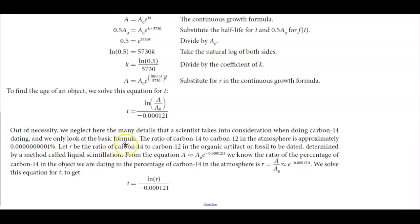Out of necessity, we neglect here the many details that a scientist takes into consideration when doing carbon-14 dating and only look at the basic formula. The ratio of carbon-14 to carbon-12 in the atmosphere is approximately 0.00000001. Let r be the ratio of carbon-14 to carbon-12 in the organic artifact or fossil to be dated, determined by a method called liquid scintillation. From the equation, we know that the ratio of the percentage of carbon-14 in the object we are dating to the percentage of carbon-14 in the atmosphere is given by r = A/A₀.